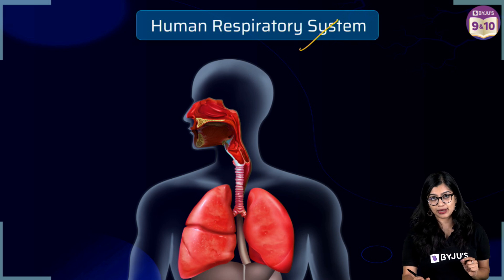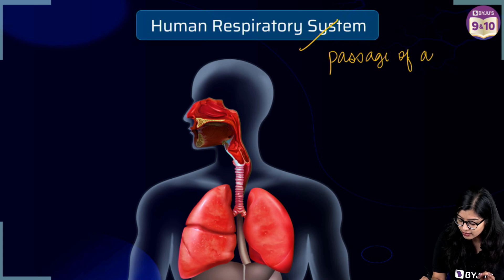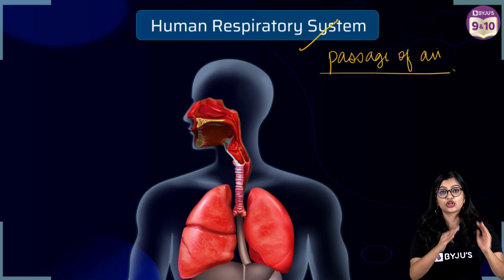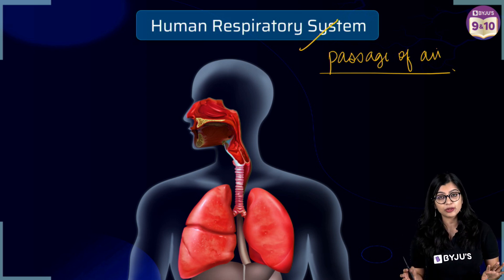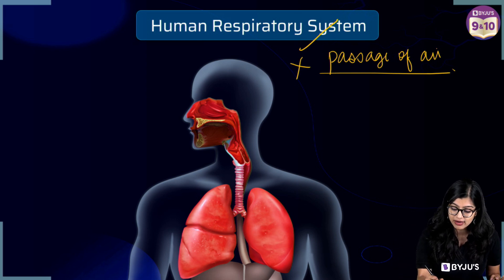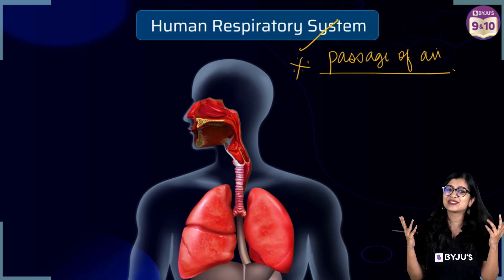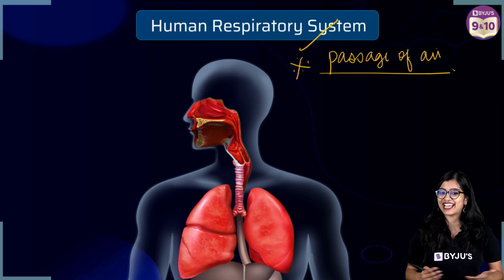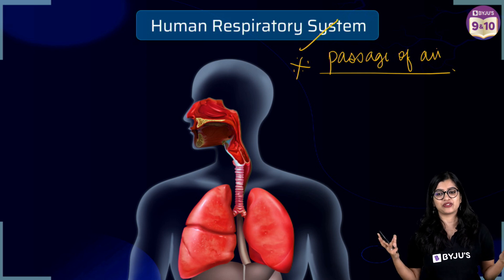From a board examination point of view, what you need to know is the pathway or passage of air through the human respiratory system. The chronology in which the organs are placed and how air moves through them is very important. So let's go on this journey and understand the different parts of the human respiratory system.